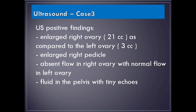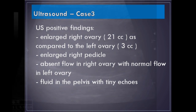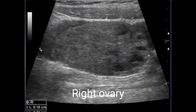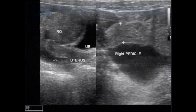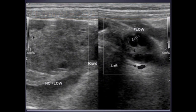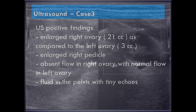Case 3: An 8-year-old female presented with dull aching right flank pain for 3 days with no other complaints. Ultrasound positive findings include an enlarged right ovary of 21 cc compared to the left ovary of 3 cc, an enlarged right pedicle, absent flow in the right ovary with normal flow in the left ovary, and fluid in the pelvis with tiny echoes.